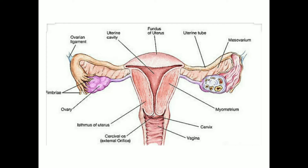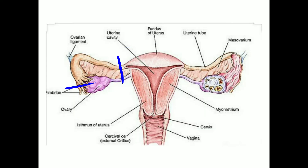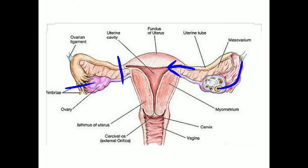The uterine tube is about 10 centimeters long and less than one centimeter in diameter. The diameter of the lumen varies considerably — it is less than one millimeter at its opening into the uterine cavity.